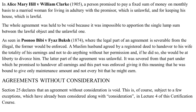In Alice Mary Hill vs. William Clark, a person promised to pay a fixed monthly sum to a married woman for living in adultery with the promiser (unlawful) and for keeping his house (lawful). The whole agreement was held void because it was impossible to apportion the single lump sum between the lawful and unlawful objects.